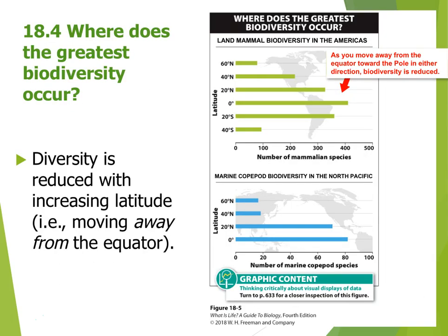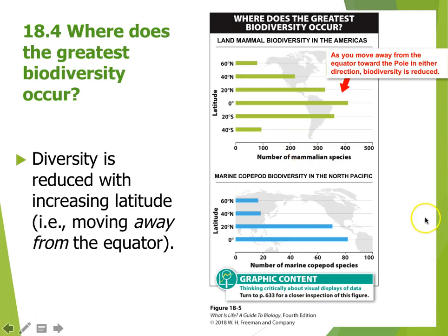Looking around the globe, on land the most biodiversity exists around the equator, and it drops off as you go north or south. In North America alone, we have somewhere in the nature of 200 to 220 different mammalian species. In the oceans, a similar pattern holds - where waters are warm with lots of sunlight, there are many species like copepods. As you move into cooler waters, marine biodiversity decreases.